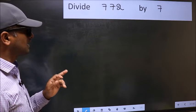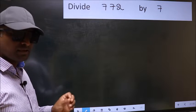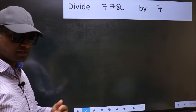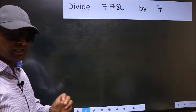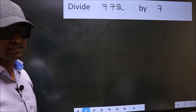Divide 772 by 7. While doing this division, many do this mistake. What is the mistake that they do? I will let you know. But before that, we should frame it in this way.